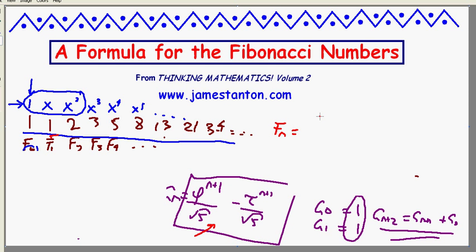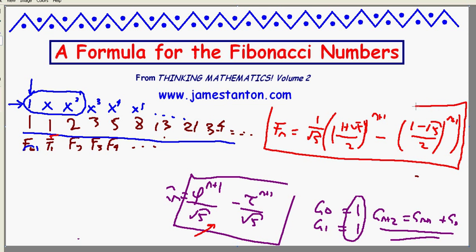The nth Fibonacci number must be, everything's divided by root 5, I'll put that at the front. Phi to the n plus 1. Phi was 1 plus root 5 over 2 to the n plus 1, minus tau. That was 1 minus root 5 all over 2, and this is actually the n plus 1.